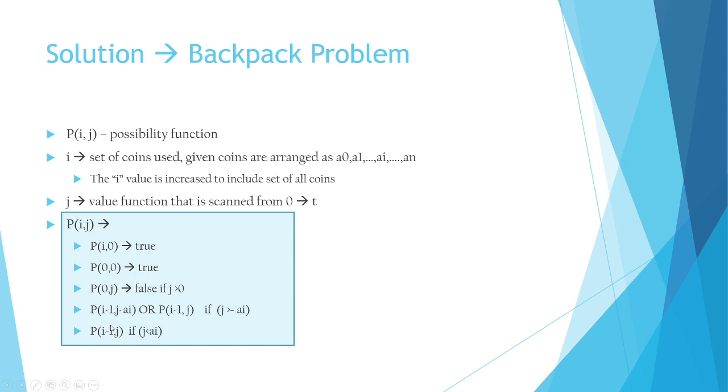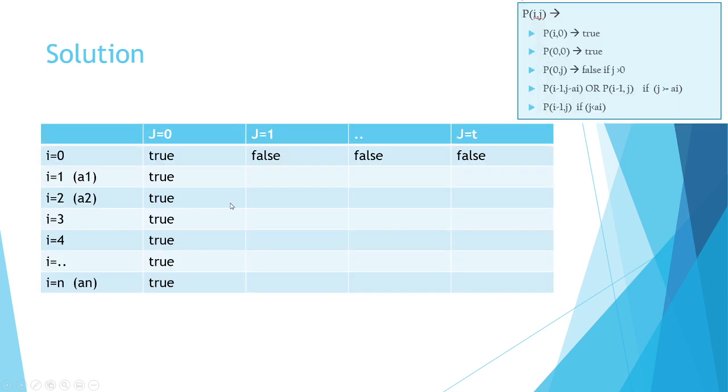So let's look at that next. We fill up the boundary conditions here when j equals zero—it's all true. Doesn't matter. If the value I'm trying to make is zero, then it's always possible. Let's assume that.